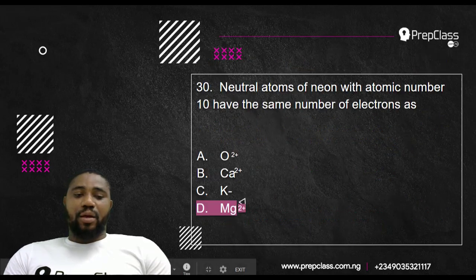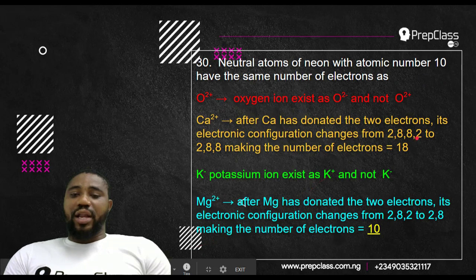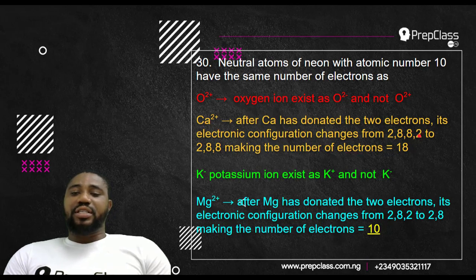This electron in last shell, it can donate it. It can donate these two electrons in its last shell to become Ca2+. When it donates this electron in its last shell, its electronic configuration becomes 2, 2, 8. And when you add 2, 2, 8, it is 18. So making the number of electrons remaining to be 18. Normally it has 20. If it donates the last two in its outermost shell, you're left with 18. But they say it's 10. We are looking for 10, not 18. So option B will not be.